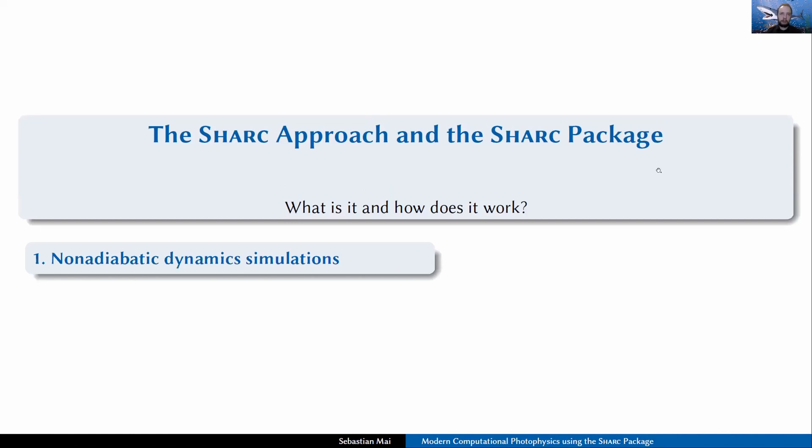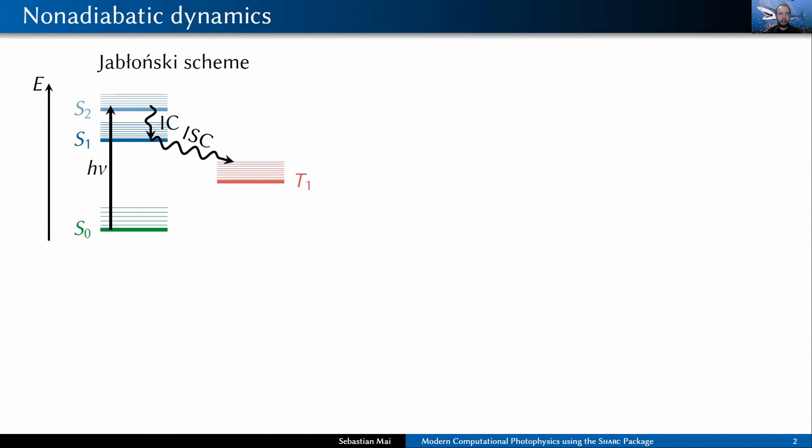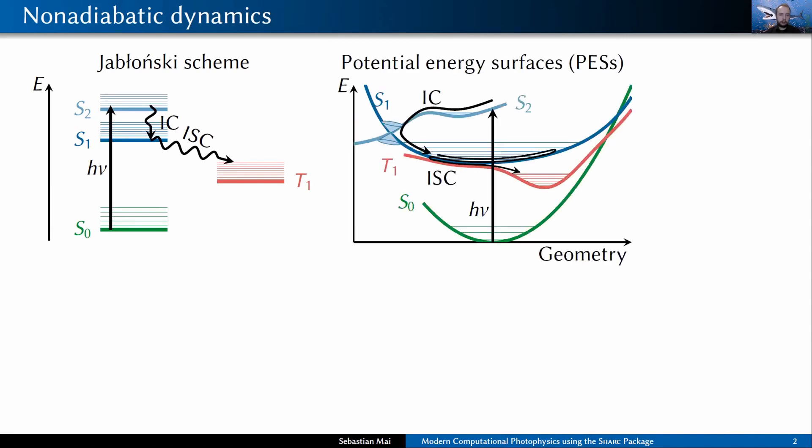The SHARC approach is a non-adiabatic dynamics approach. Non-adiabatic dynamics is simply described by the Jablonski scheme. We have some initial photo excitation, and then we have non-adiabatic transfer like internal conversion and intersystem crossing. But the Jablonski scheme is only a very simple way of describing this. As we all have seen in many talks today and in the last days, this should be described much more precisely by using potential energy surfaces. When you describe the coupled electronic and nuclear motion on these potential energy surfaces, you can derive branching ratios, lifetimes, and reaction mechanisms, which is essentially what we are interested in.